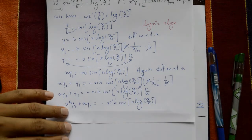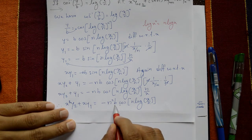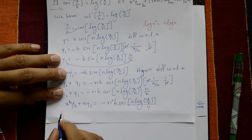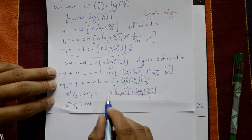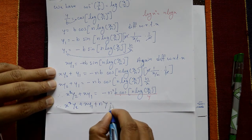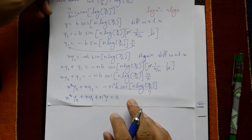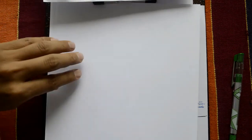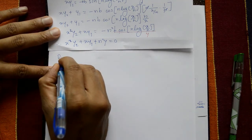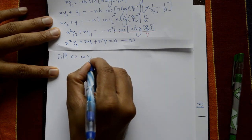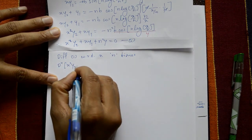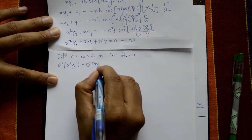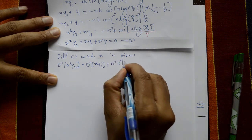The right-hand side equals −n² y since y = b · cos(n · log(x/n)). Shifting to the left: x² y₂ + x y₁ + n² y = 0. Now differentiate n times using Leibniz theorem: dⁿ[x² y₂] + dⁿ[x y₁] + n² · dⁿ[y] = 0.